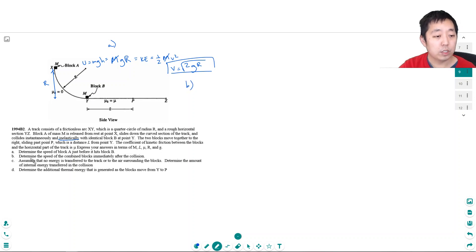Part b, determine the speed of the combined blocks immediately after the collision. Okay so now it collides and momentum is conserved right, so the momentum right before it hits is mv and that's big m. What's its velocity? We just solved it, square root of two gr.